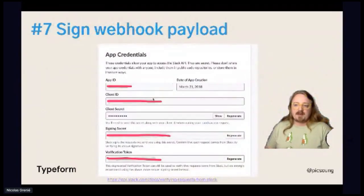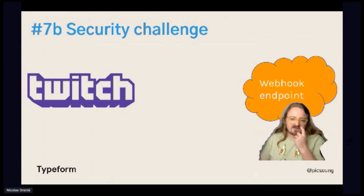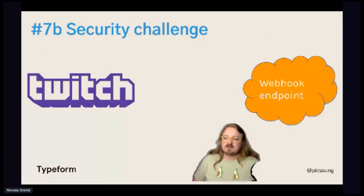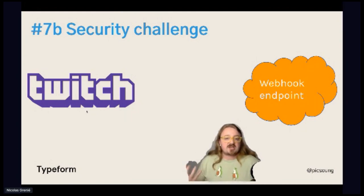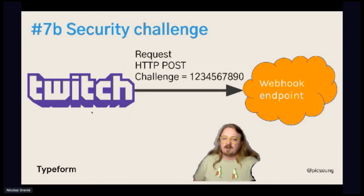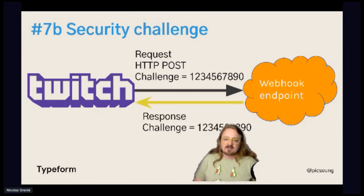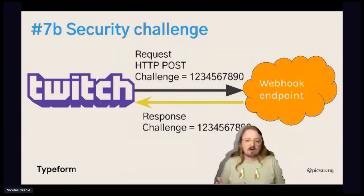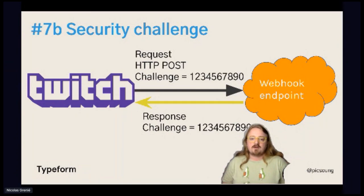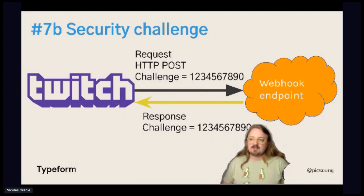Another security approach I've seen is what Twitch does. It's probably a bit harder to build, but it's an interesting way of doing verification. Once you set up a webhook on Twitch, they send a challenge to your URL — a POST request with a random string — and you just send it back to Twitch. They verify that you own this URL, confirming this is the proper webhook. It's a two-step process you only do once, and afterwards you're authenticated. It can be a bit cumbersome to explain to your users, but at least you're guaranteed this is where they intended to send data.